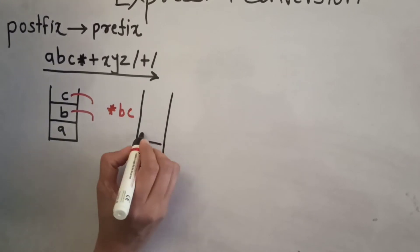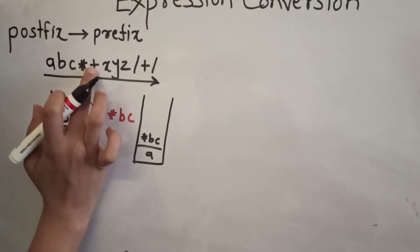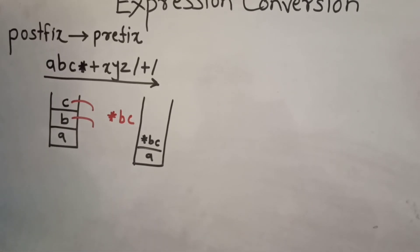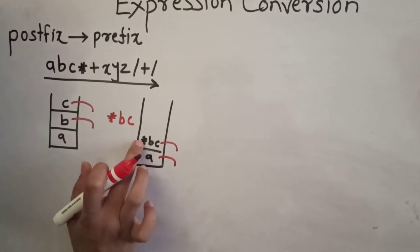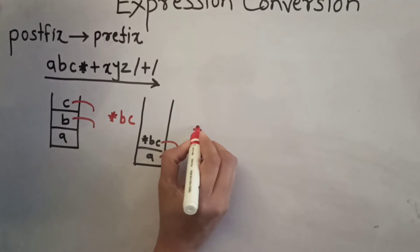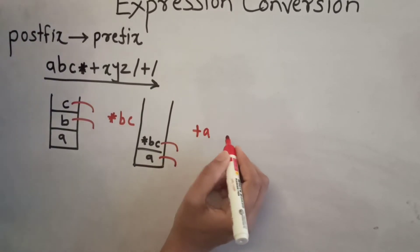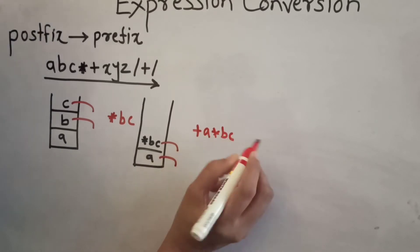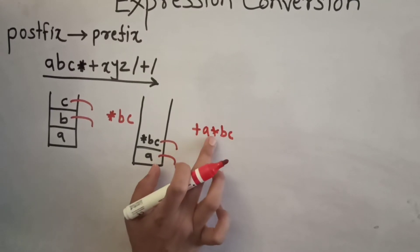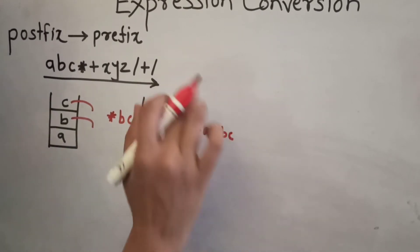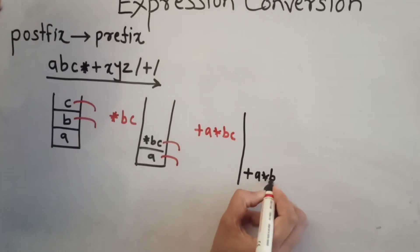Now the stack contains A at the bottom and *BC as the next element. The next character is the plus operator. We delete the topmost two operands — *BC and A — and our operator is plus. Plus goes to the first position, then A, then *BC. So the prefix expression becomes +A*BC. This whole expression is pushed back onto the stack, giving us +A*BC on the stack.